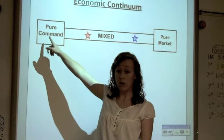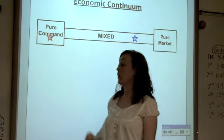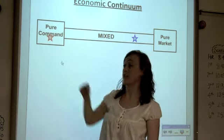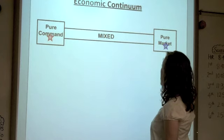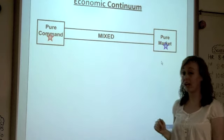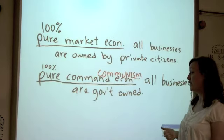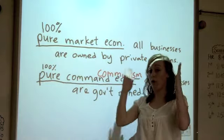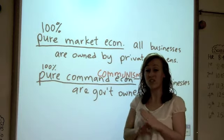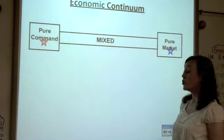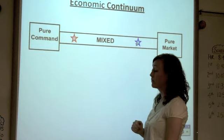Okay, we've got pure command over here. If a country was pure command, then that star would represent that country. If a country was pure market, then that star would represent that country. But as we just talked about on this slide, there are no pure 100% market or pure 100% command. They just don't exist. So what you get is a lot of countries that are in the middle.